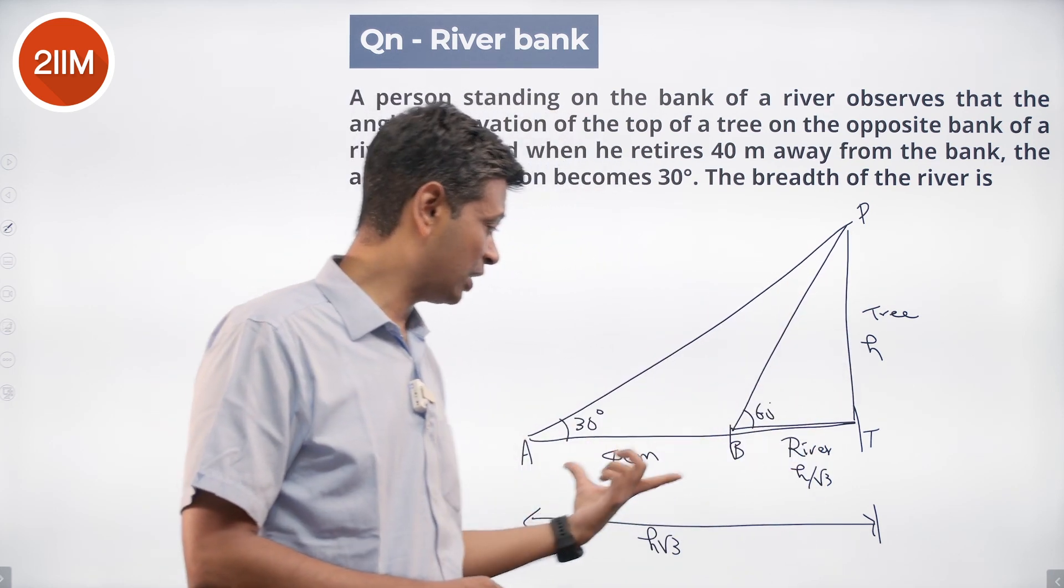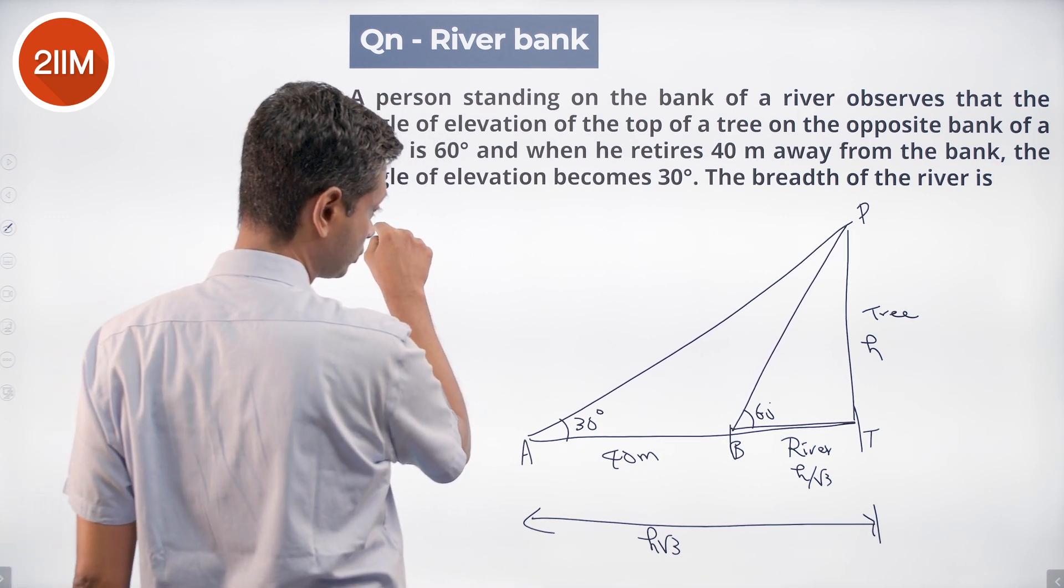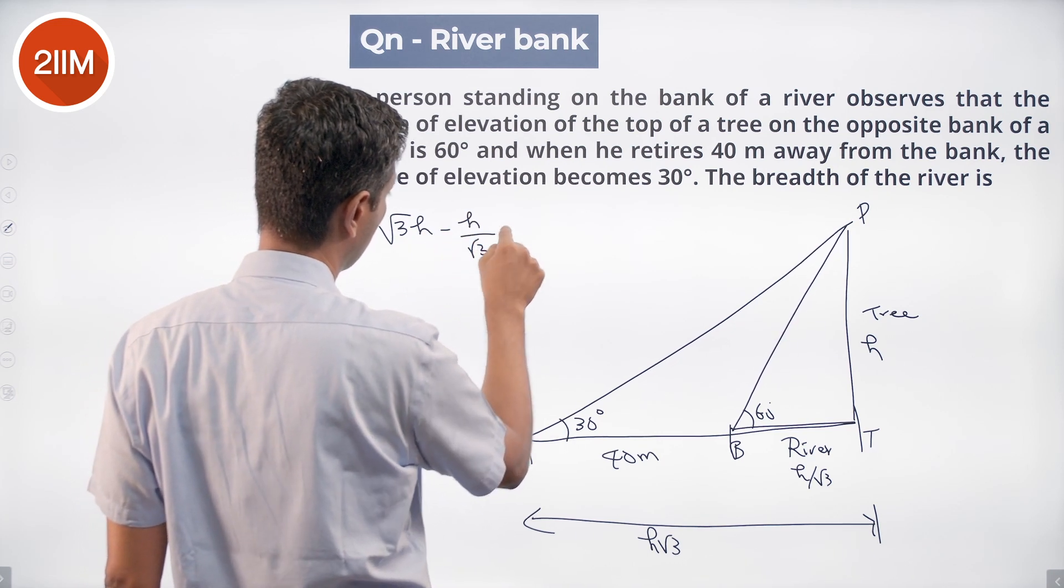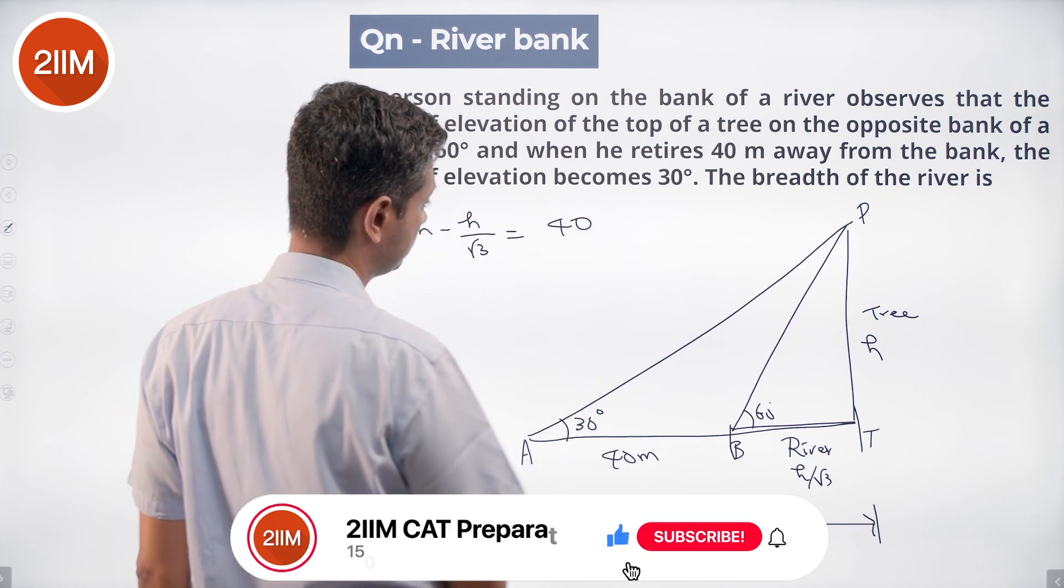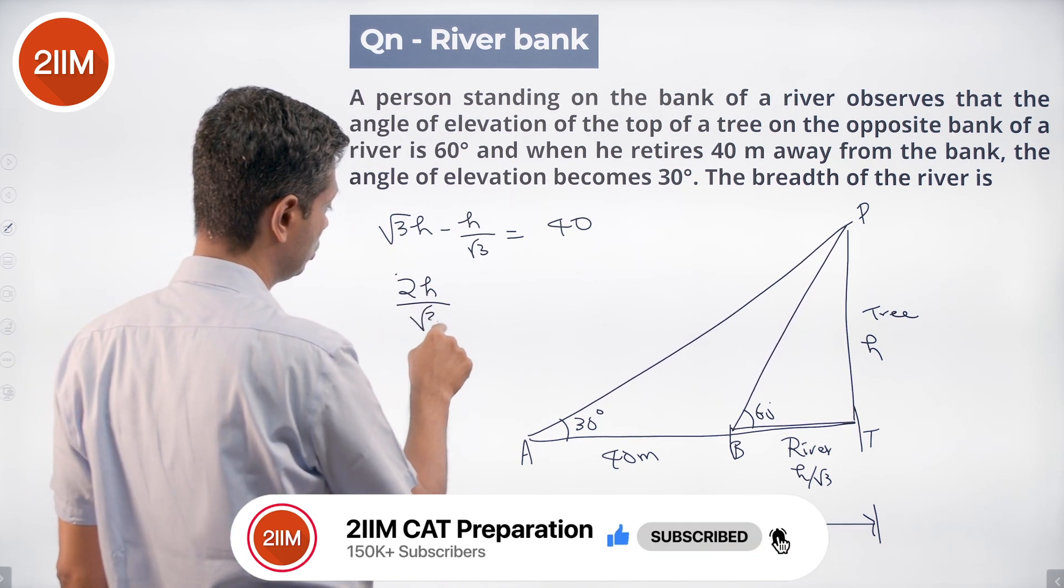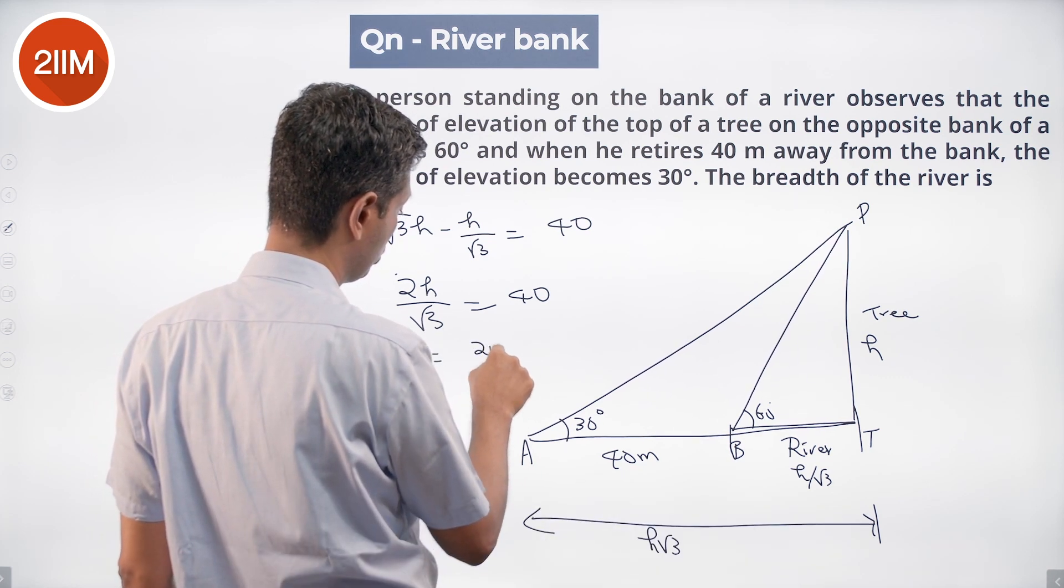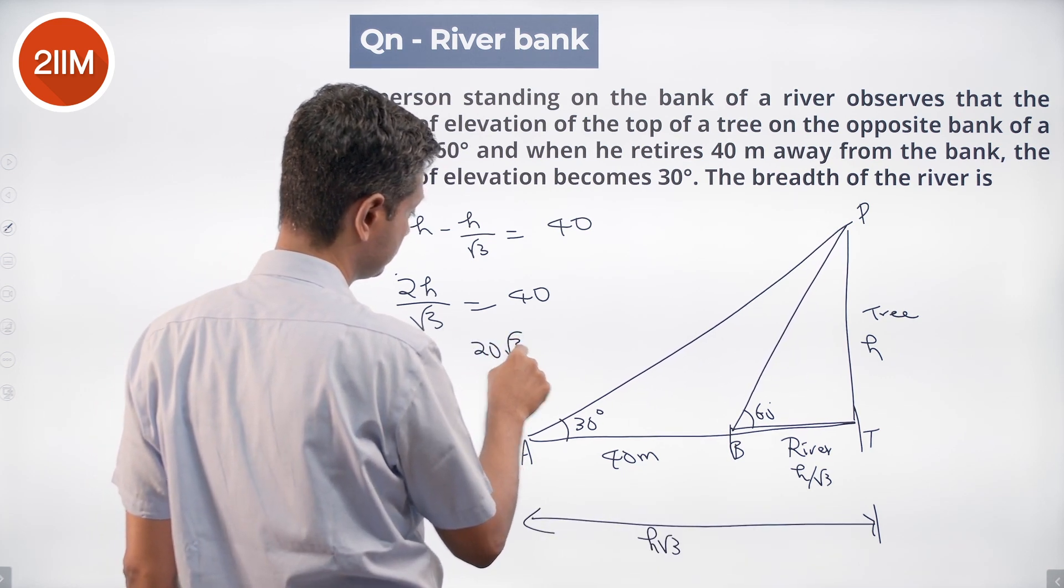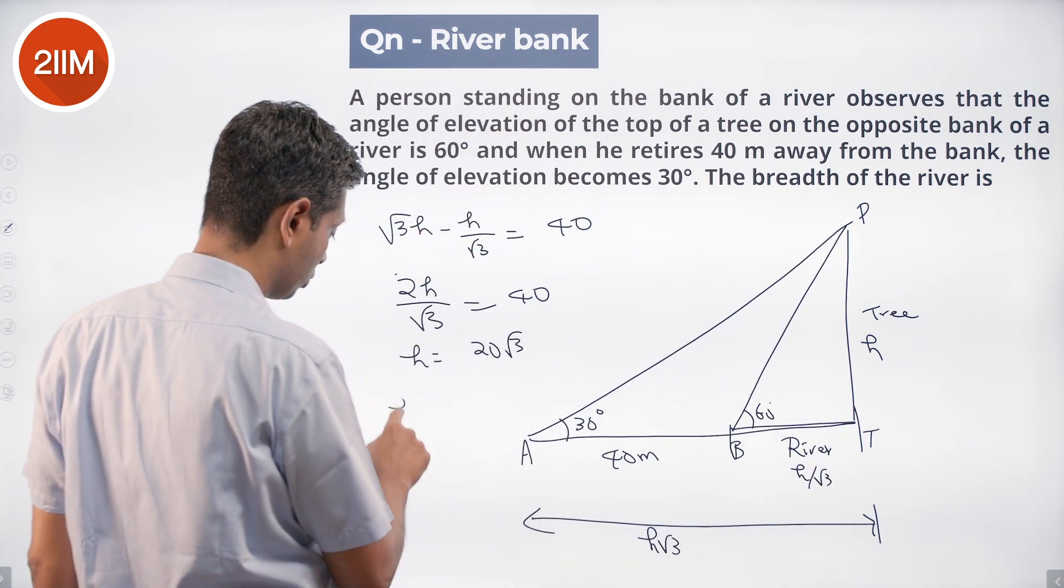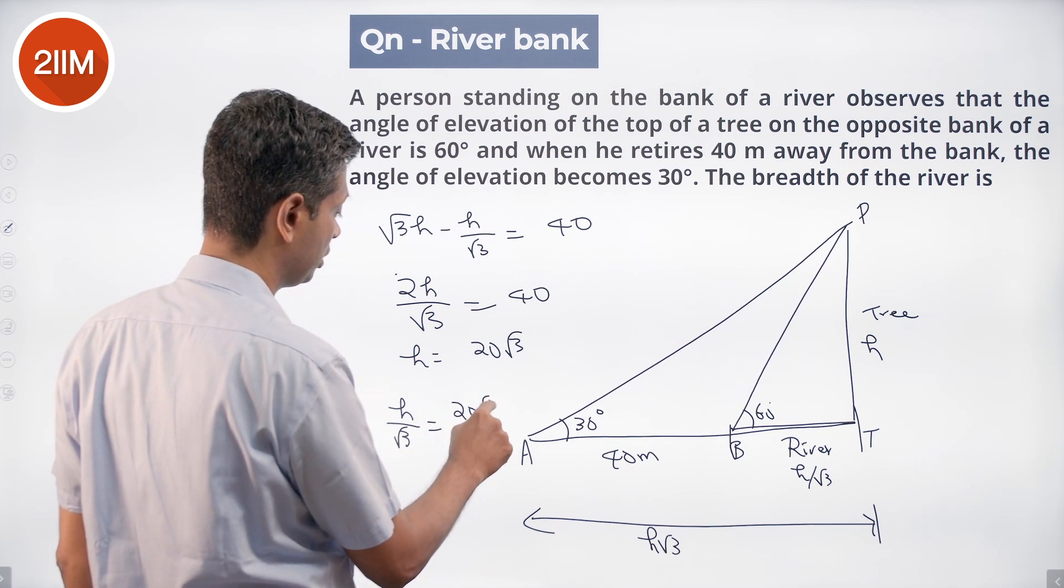Or quite simply, root 3 H minus H by root 3 is 40. H is 20 root 3. We don't want to find H, we want to find the breadth of the river which is H by root 3, which is 20 root 3 by root 3, which is 20 meters.